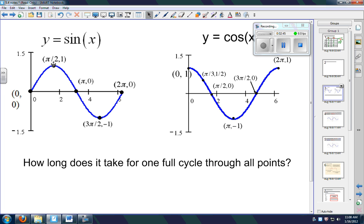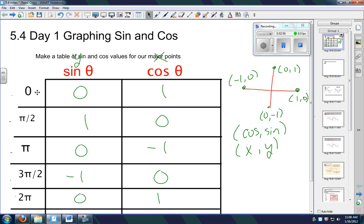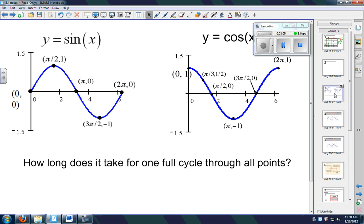(0,0), okay, π/2 comma 1, π comma 0, 3π/2 comma -1, 2π, 0. Okay, so we're just going to take these two coordinates. Here's our x values, here's our y values. Here's our x values, here's our y values for these. And these are what these two graphs look like.